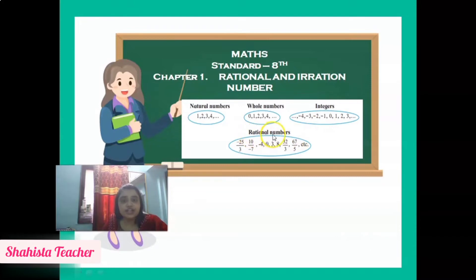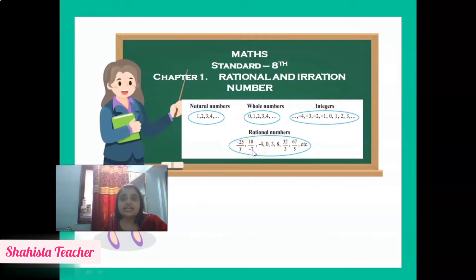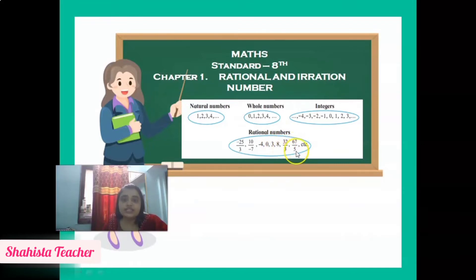Rational numbers — the word rational contains the hidden word 'ratio.' Rational numbers are numbers in ratio form, such as -25/3, 10/-7, or -4/1. Rational number means a number expressed as P upon Q, where Q cannot be equal to 0. We will see the full definition in the next slide.